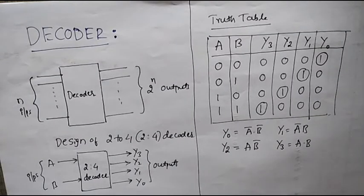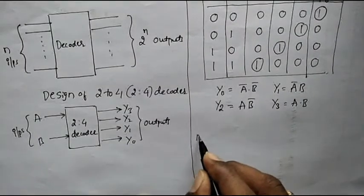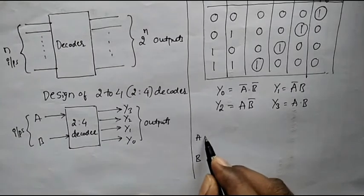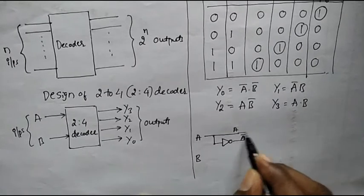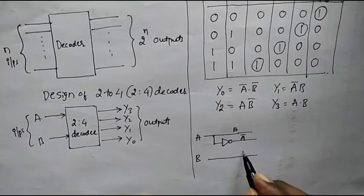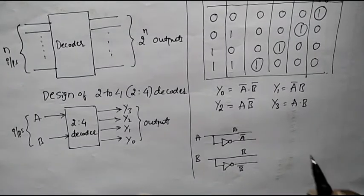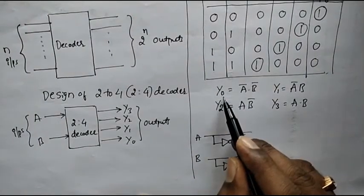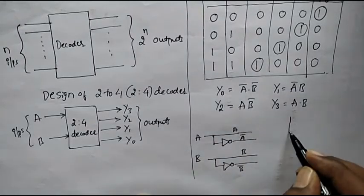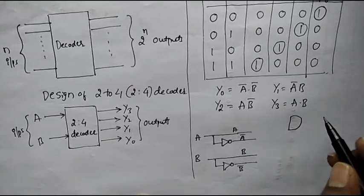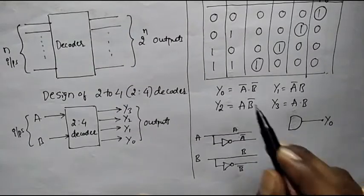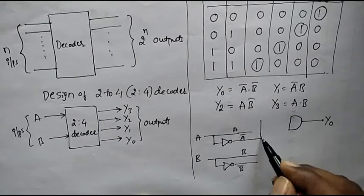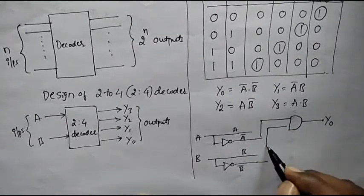Now let us draw the circuit diagram for the 2-to-4 decoder. Let us take two inputs A and B, with an A line, an A-bar line, a B line, and a B-bar line. Y0 is an AND gate with inputs A-bar and B-bar, giving the Y0 output.